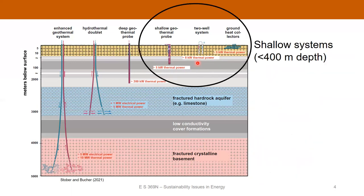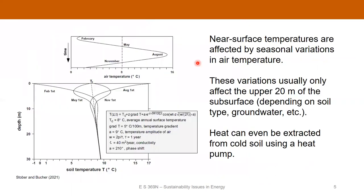One important thing to know is that near the surface, temperature is affected by seasonal variations in air temperature. Here's a figure from Stober and Bucher from a site in Finland. The average air temperature goes from about 1°C in February to about 15°C in August. This means there's a variation in the thermal profile of the subsurface — in February it's very cold at the surface, but in August the surface can actually be warmer than the subsurface.